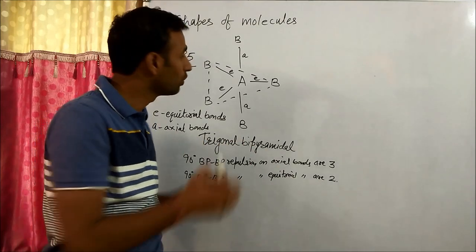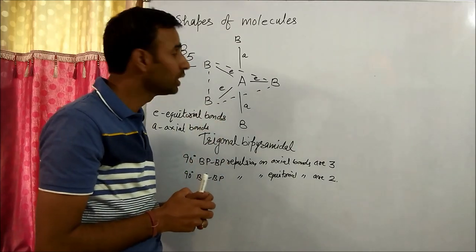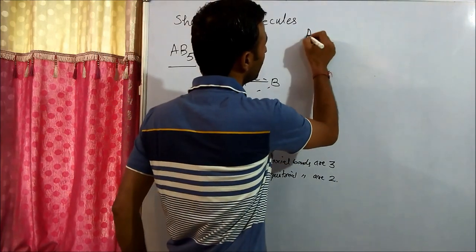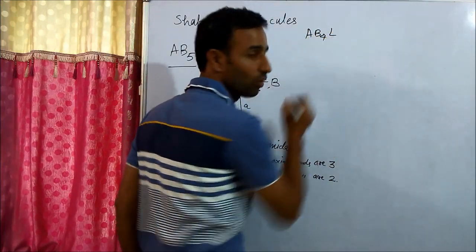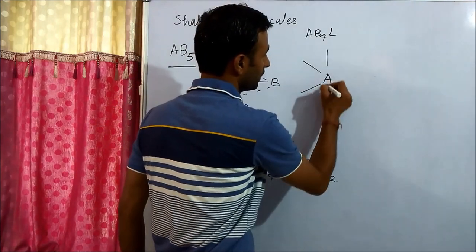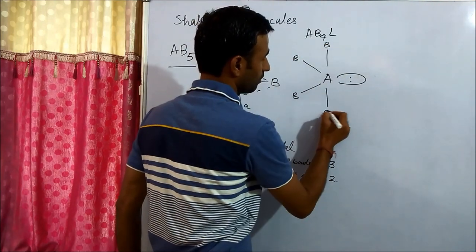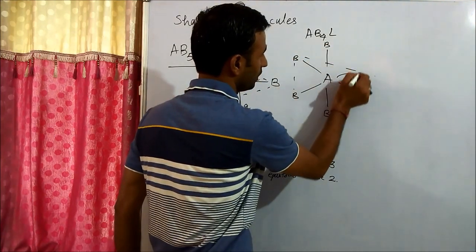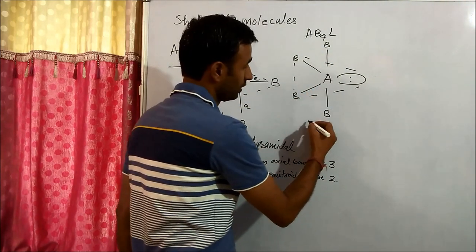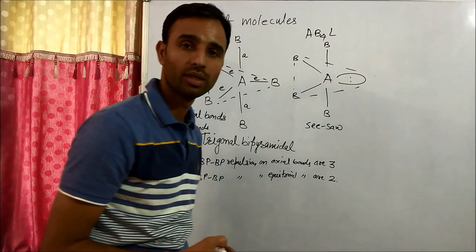So if we have a lone pair, the lone pair occupies an equatorial position because repulsion on equatorial bonds is less. For example, if we have four bond pairs and one lone pair, then the lone pair is on the equatorial position. This shape is known as see-saw.